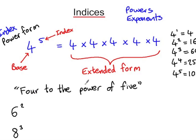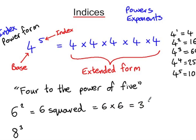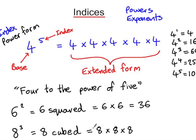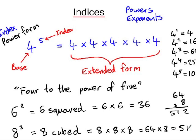Notice the terminology: it's four to the power of five. If the power is two, we have a special name — it's six squared, which still means six times six, giving thirty-six. And if the power is three, we say we're cubing the number. So eight cubed means eight times eight times eight. Eight times eight is sixty-four, so sixty-four times eight is five hundred and twelve.